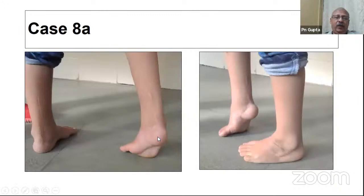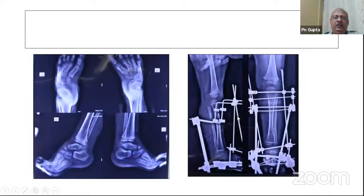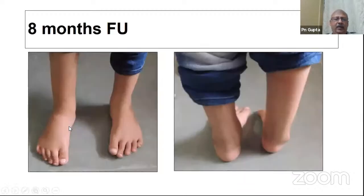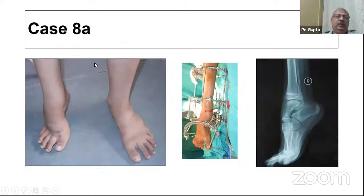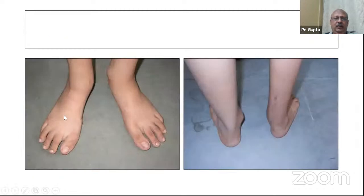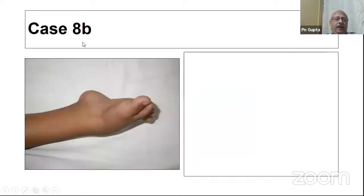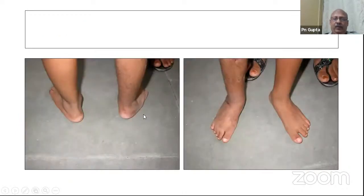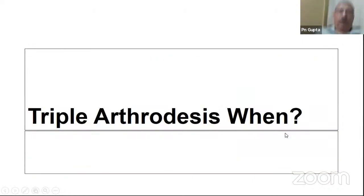External fixators are especially indicated when the equinus is very rigid. Ideal indications include a badly scarred foot or a very stiff foot. This is a child with bilateral clubfoot where the right side had badly relapsed — we did a JESS back in the 2000s and achieved a reasonable foot, though not normal. Another foot with a lot of equinus was treated with Ilizarov — you can see the significant equinus and the end result.